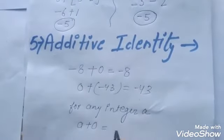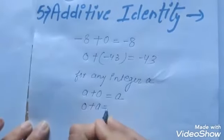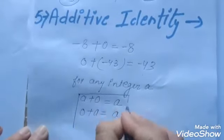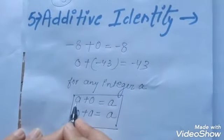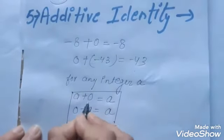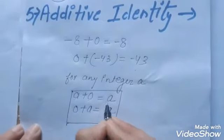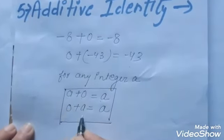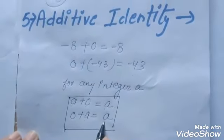In general, for any integer a: a plus zero equals a and zero plus a equals a. अगर हम कोई भी integer लें और उसमें 0 plus करें, तब भी वही integer आएगा। और अगर 0 में कोई भी integer plus करें, तब भी वही integer आता है।